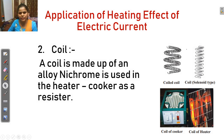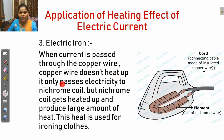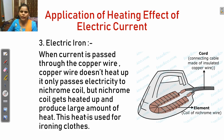The next application is in the electric iron. In the cord, copper wire is used. The filament inside uses nichrome wire. When current passes through the copper wire, the copper wire does not heat up — it only passes electricity to the nichrome coil. The nichrome coil gets heated up and produces a large amount of heat, which is used for ironing clothes.